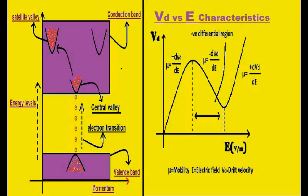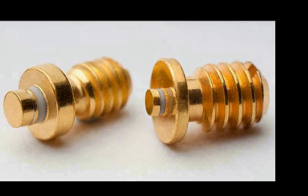By attributing this to conductivity, gallium arsenide can be called a bulk negative differential conductivity device. This increasing and decreasing of mobility due to increasing electric field — the negative differential conductivity — is similar to the negative resistance region of the tunnel diode. This behavior exhibited by gallium arsenide is called the Gunn effect. An important point: the Gunn diode does not have any PN junctions.